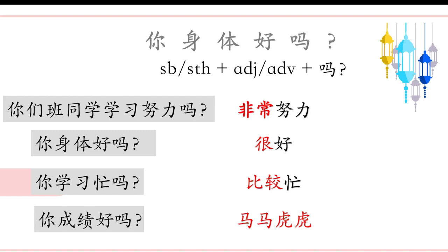Have we learned any other adverbs with a similar meaning? 极了 — we learned it last lesson. 非常 is placed in front of the adjective, and 极了 is placed at the end of the adjective. The two have the same meaning — extremely. So they are the same.